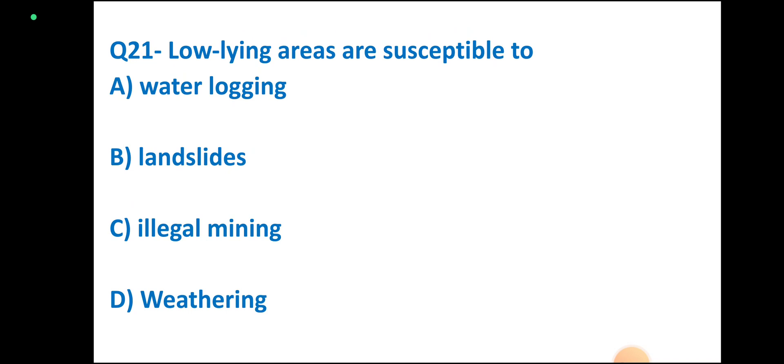Question number 21: Low lying areas are susceptible to water logging, landslides, illegal mining, or weathering. Correct answer: water logging.